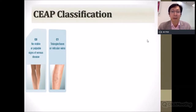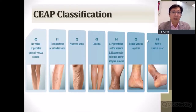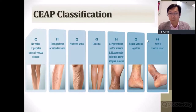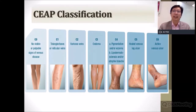The classification of varicose veins runs from grade zero to six. Grade zero means no visible veins. Grade one is spider veins. Grade two is visible varicose veins. Grade three is leg swelling. Grade four includes skin changes such as pigmentation, venous eczema, and lipodermatosclerosis. Grade five is a healed venous ulcer, and grade six is an active venous ulcer.